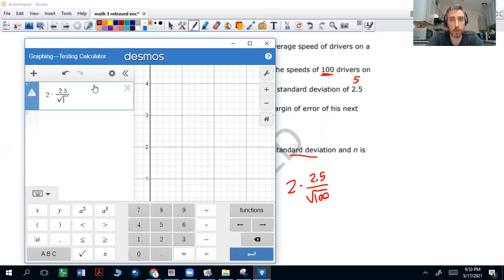Okay, that's going to be 0.5. That's going to be 0.5. That's my margin of error.